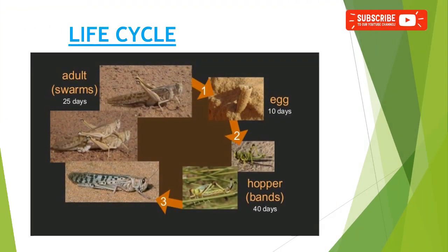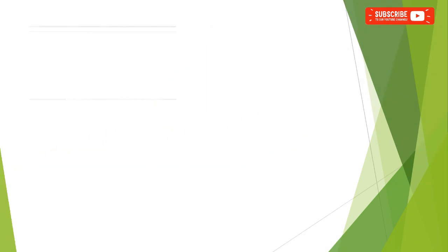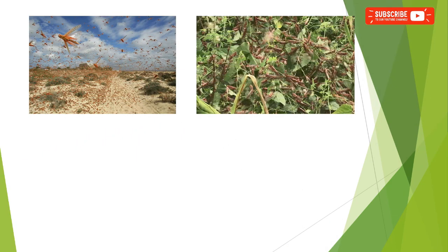With respect to the life cycle, it consists of three stages: the egg stage, the hopper stage or nymphal stage which mainly consists of five to six larval instars, and the adult stage. The egg stage is around 10 to 65 days, the hopper or nymphal stage is around 24 to 95 days, and the adult stage is two and a half to five months. The total life cycle varies from two to six months.